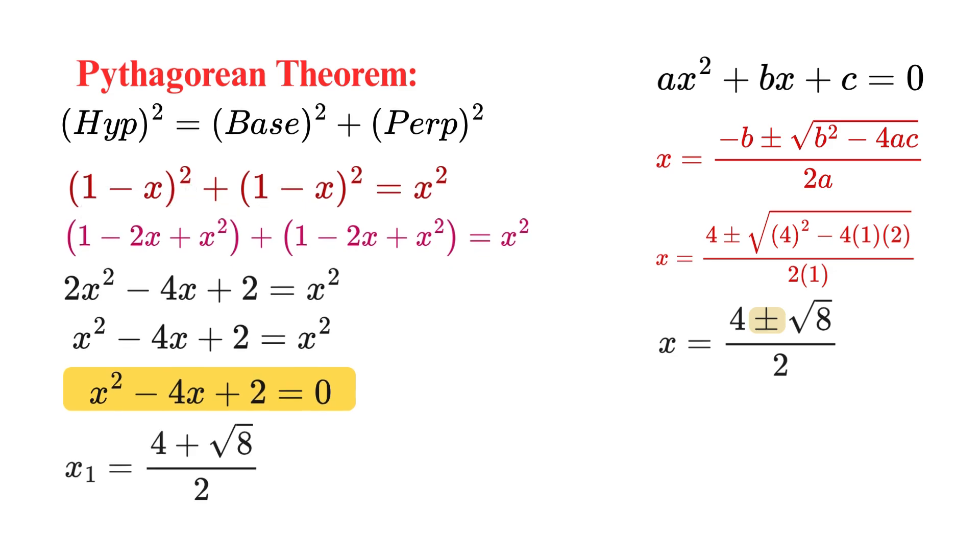The first solution, let's call it x₁. If we use the plus sign, x₁ = (4 + √8) / 2, and our second solution, let's call it x₂, = (4 - √8) / 2. And here's the problem. We have 2 mathematical solutions, but we can only pick 1. Remember, we're looking for the length of the hexagon's side, which is the real, physical length inside our square. So both of these cannot be right.